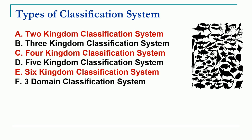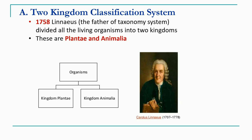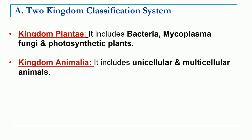Today we are going to focus on the two-kingdom classification system and the three-kingdom classification system. The two-kingdom classification system was proposed by the great taxonomist Carlos Linnaeus in the year 1758. He is also known as the father of taxonomy. He divided all life into two kingdoms: kingdom Plantae and kingdom Animalia. Kingdom Plantae comprised all bacteria, mycoplasma, fungi, and all photosynthetic plants.